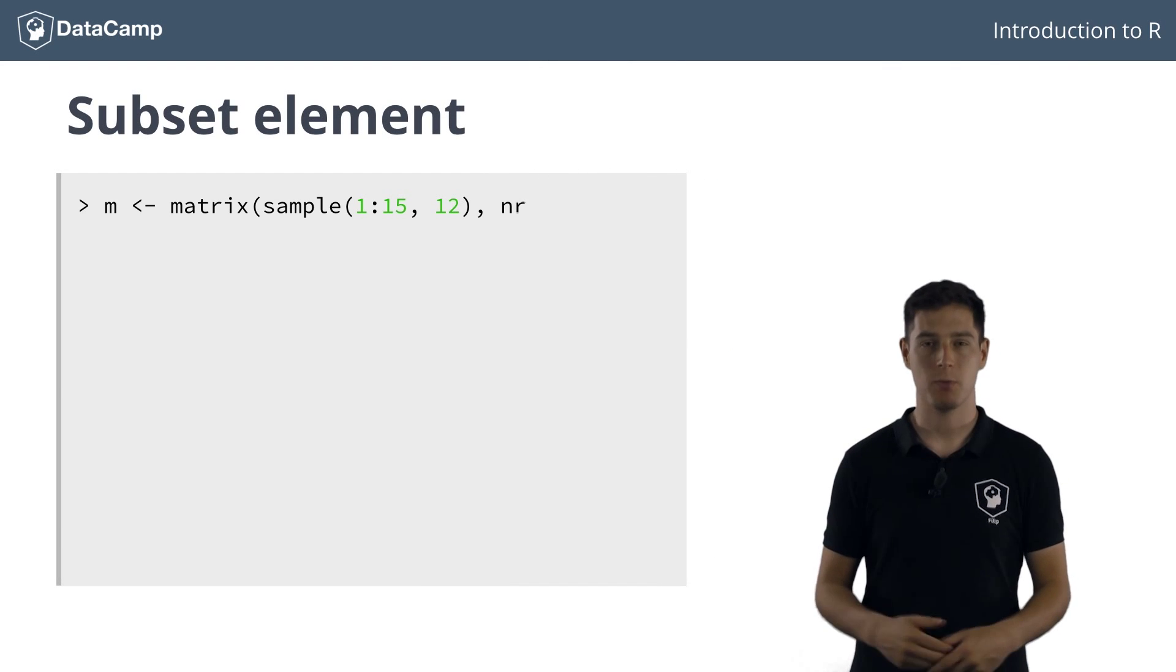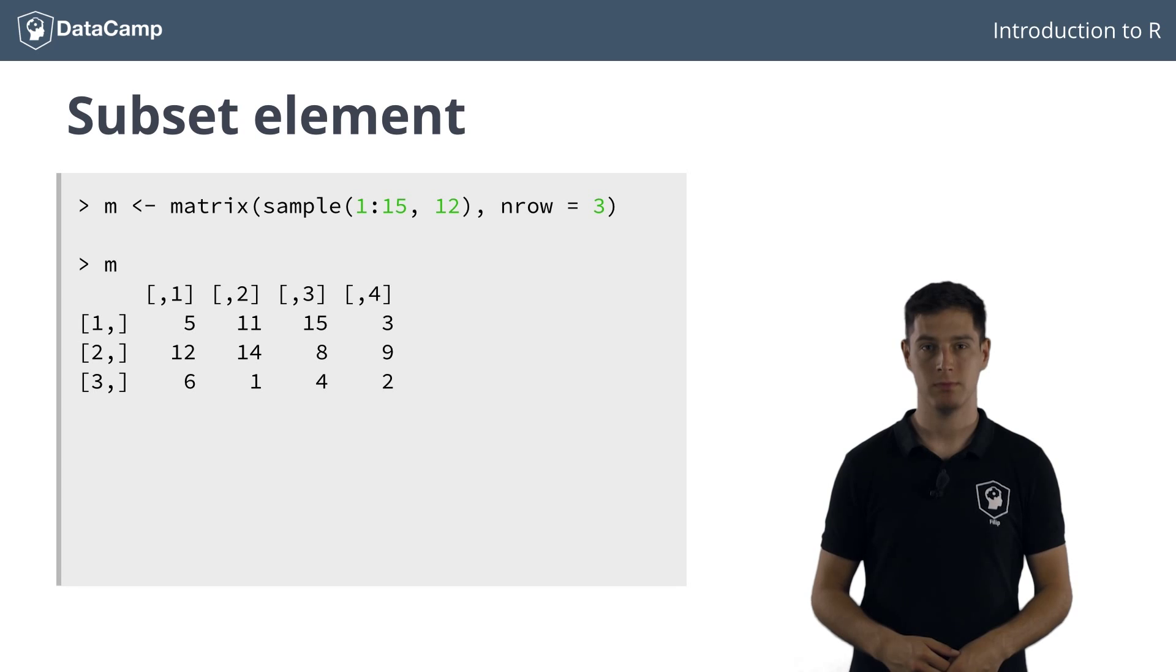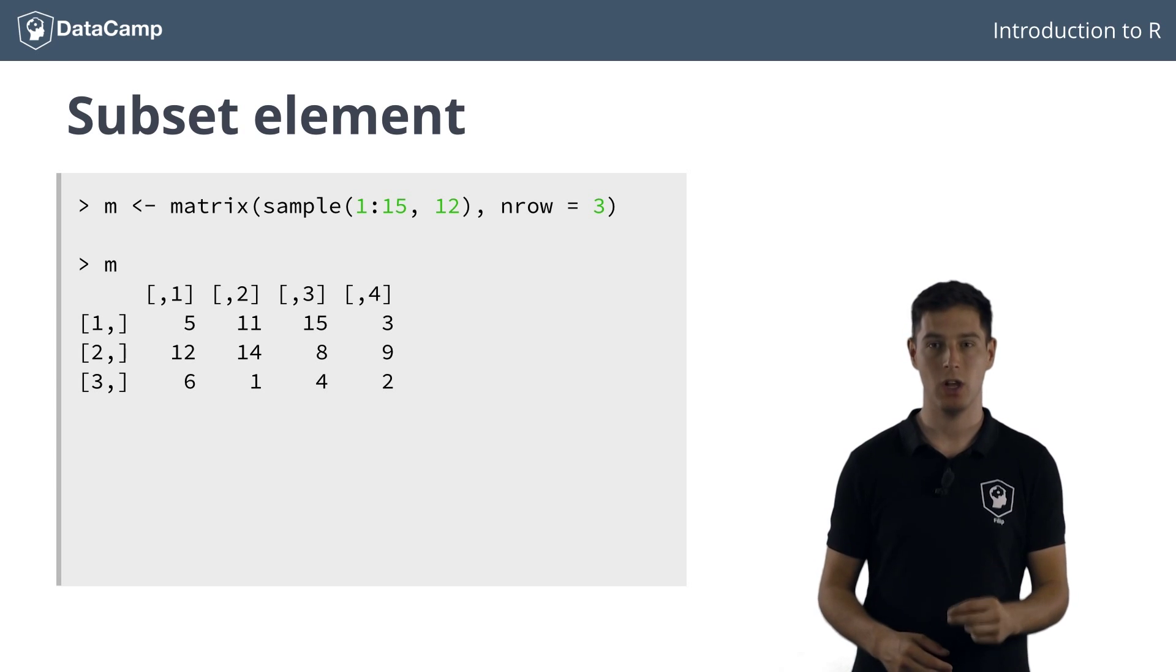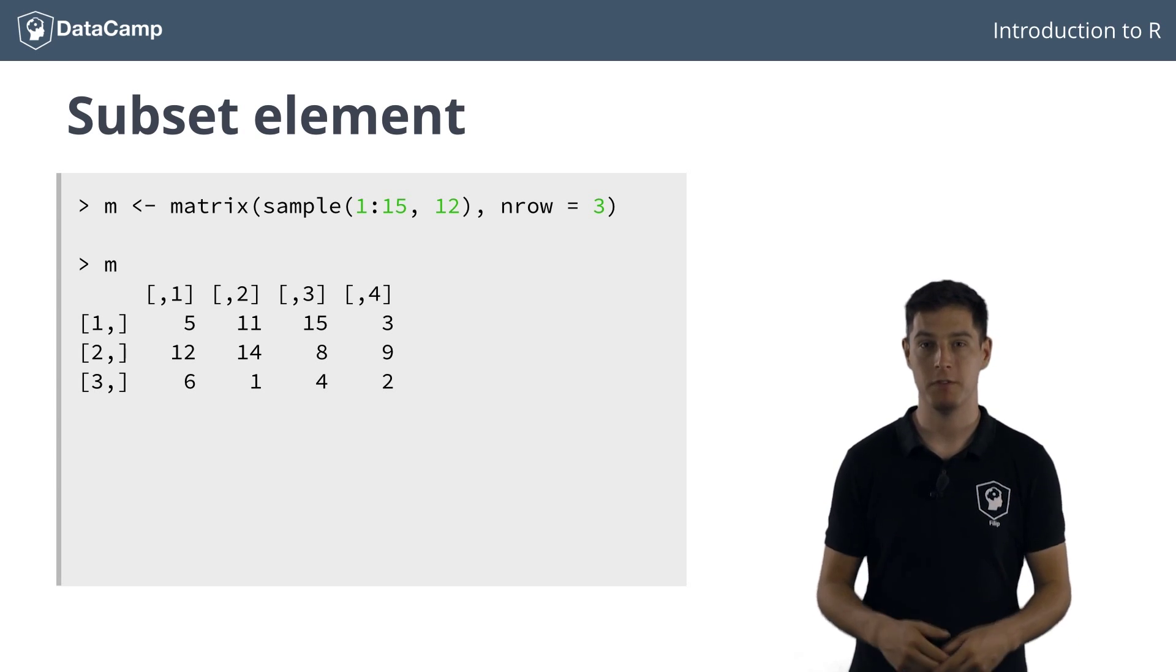Have a look at this matrix containing some random numbers. If you want to select a single element from the matrix, you'll have to specify both the row and the column of the element of interest. Suppose you want to select the number 15, located at the first row and the third column. We type m.